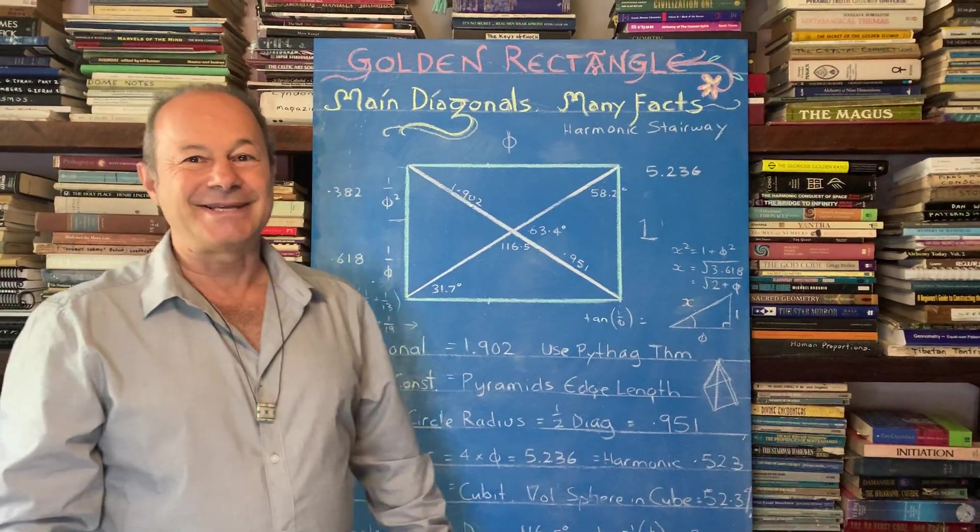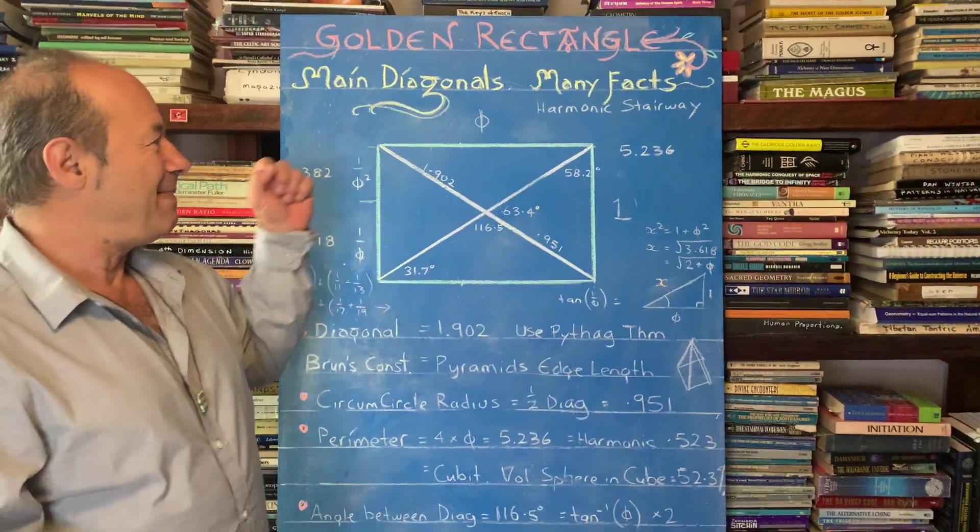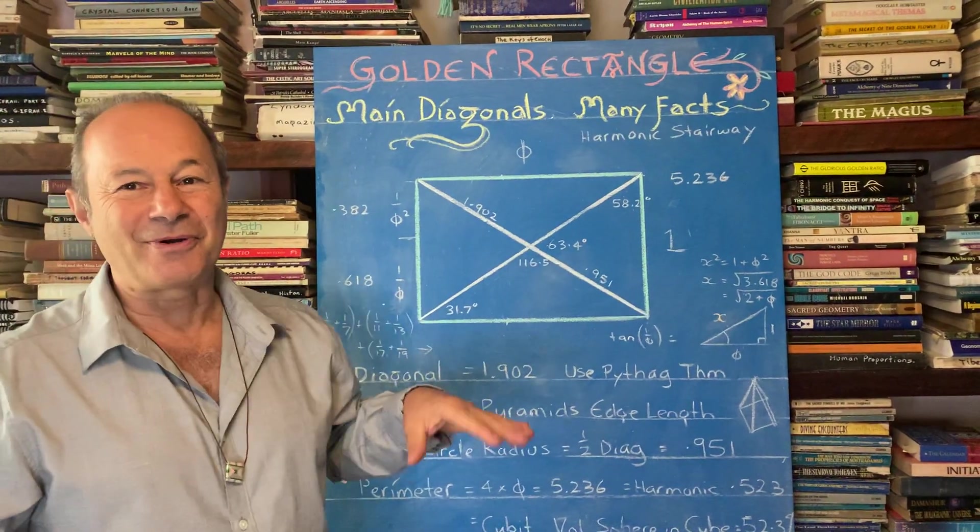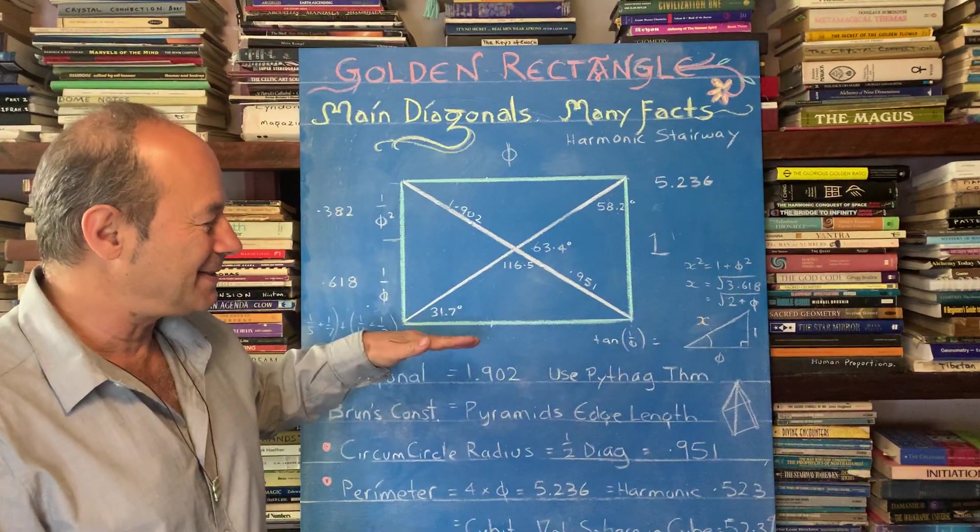We have a special lesson today. We're looking at the many facets and facts that are embedded inside the golden rectangle. You're going to be so amazed.